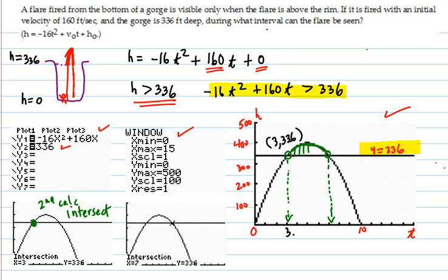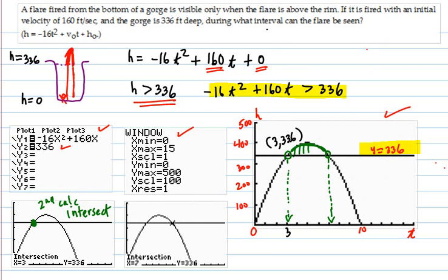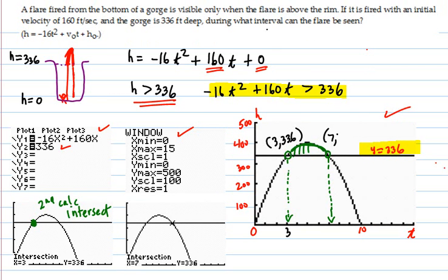And then it drops back down over to this point, which is evidently 7,336. So at 7 seconds, it drops back down into the gorge and you can't see it anymore. And that corresponded to finding that. And that was also done by second calc intersect.